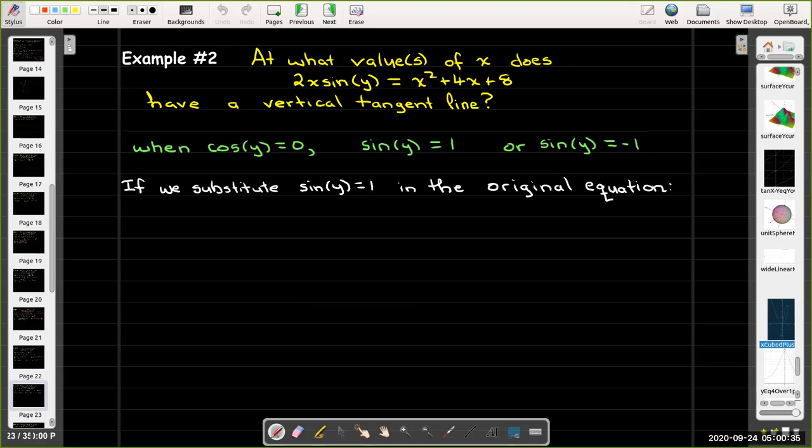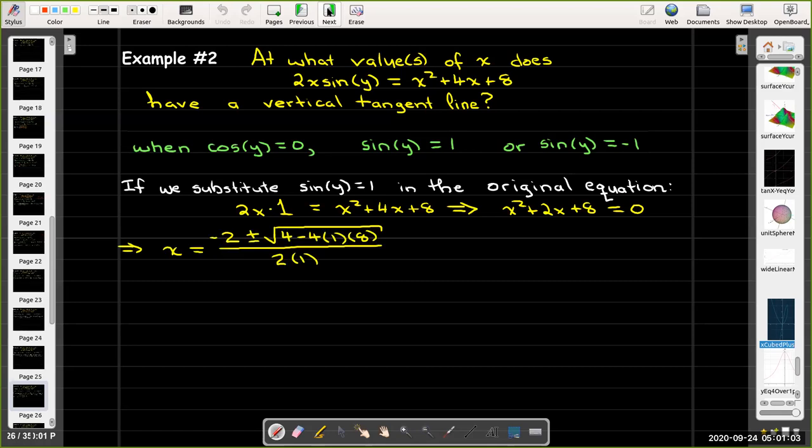So if I first consider sin(y) = 1, go back to my original equation, replace sin(y) with 1. I'll have 2x = x² + 4x + 8. That's a quadratic equation with only x in it. So let's make one side equal to 0. I can't solve that by factoring, but I can use the quadratic formula. And when I use the quadratic formula, I discover that the only solutions are imaginary. So sin(y) = 1 gives imaginary values of x. So that is not an acceptable solution.